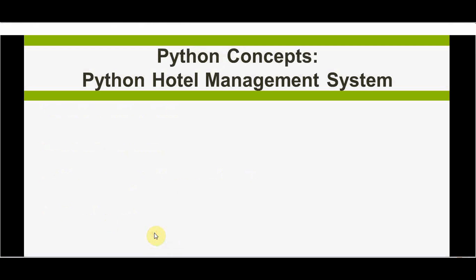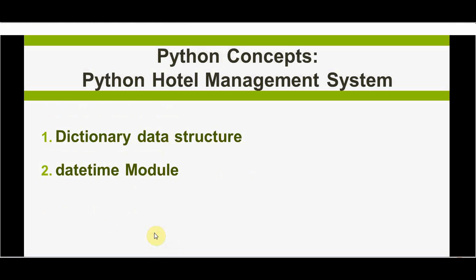Let's see the Python concepts we will be using in our project. The dictionary data structure is used to store data and we can access it easily and quickly. The datetime module — specifically the date class — is used for calculating the duration of stay, getting the check-in date and checkout date. The last concept is OOP: with Python classes we can write organized and reusable code.